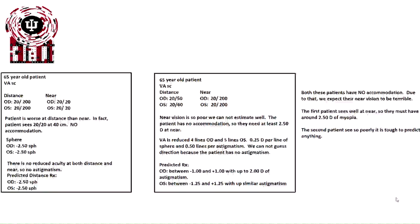Let's look at another patient on the right. Distance now is 20/50 right eye, 20/60 left eye at distance, but at near they see 20/200 both right eye and left eye. Near vision is so poor that we cannot estimate well what the prescription will be. The patient has no accommodation so they need at least a two and a half diopter add at near. VA is reduced by four lines OD, five lines OS with a quarter diopter per line of sphere and a half diopter line of astigmatism. This creates a wide range of possible prescriptions because their acuity is so poor we can't predict a good range of what their prescriptions would be.